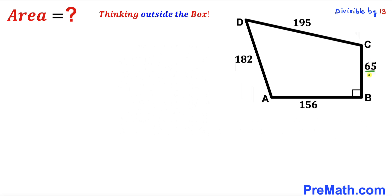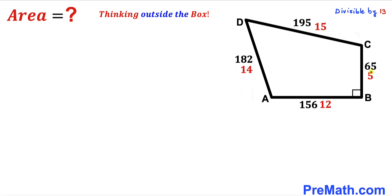If we divide 65 by 13 that gives us 5. If we divide 156 by 13 it gives us 12. If we divide 182 by 13 that gives us 14, and finally if we divide 195 by 13 that gives us 15 units. Our new set of dimensions are 5, 12, 14, and 15, and dealing with these smaller numbers will make our job simpler. We know 13 squared is 169, so whatever area we get we will multiply that number by 169.